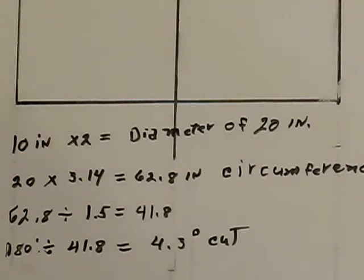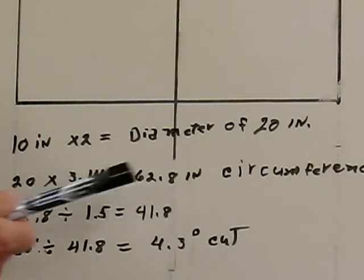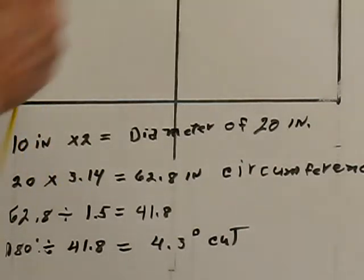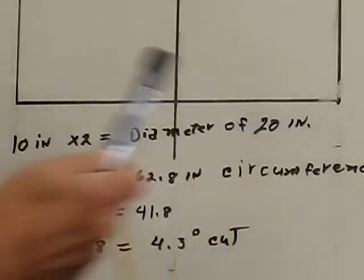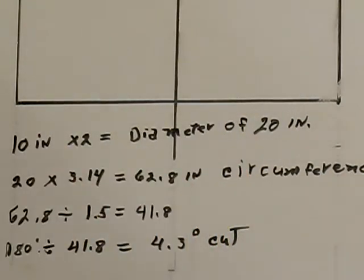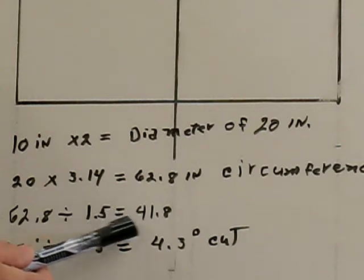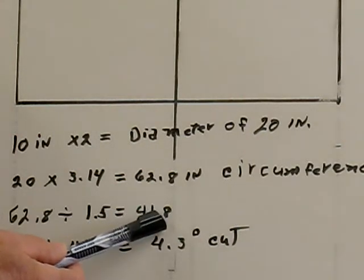Why, you ask, do we need to know this? So that we can find the angle cut. Let's go to C. We now know that in the circumference we have sixty two point eight inches. And we also know from last week that we were talking about that our pieces for the top of the trunk would be one and a half inches wide. So we take sixty two point eight divided by one point five which will equal forty one point eight.